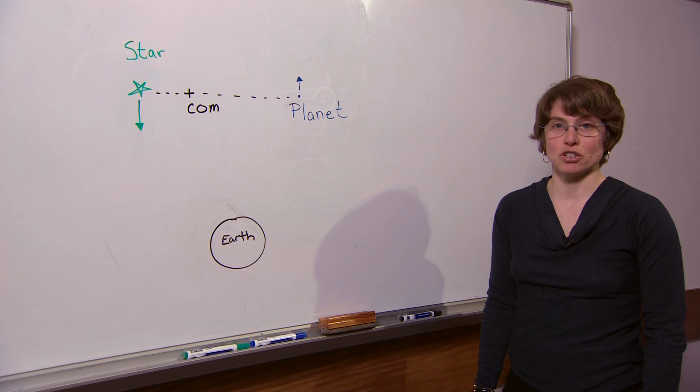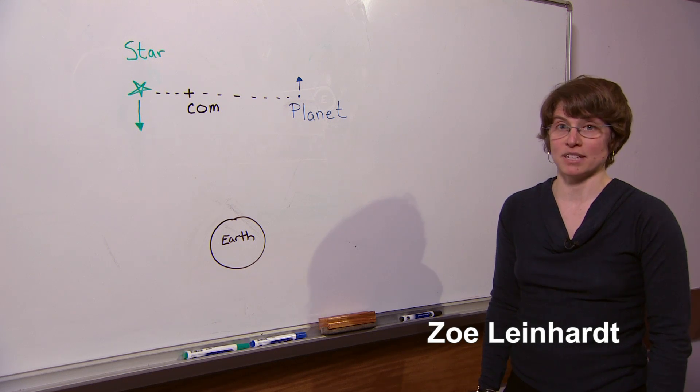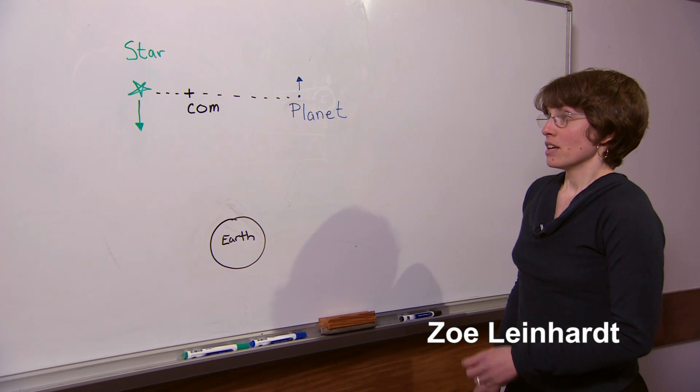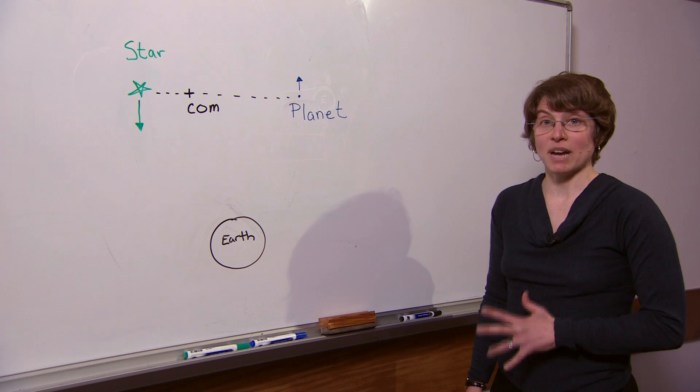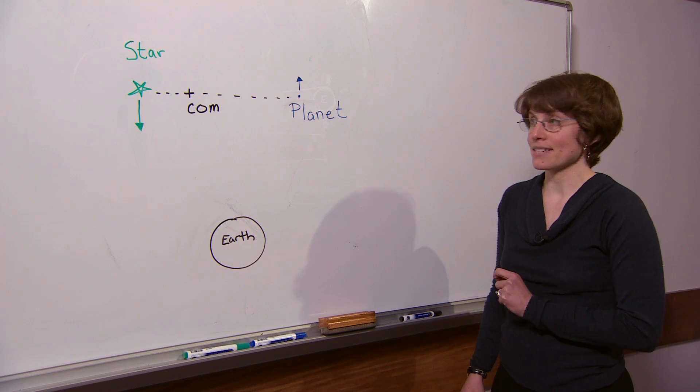There are several techniques used to observe extrasolar planets. The most successful is the radial velocity technique. The radial velocity technique is an indirect way to observe a planet.